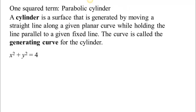One of the things that can occur is what we call a cylinder. When we say cylinder in this class, it might mean something a little different from what you're used to. A cylinder is a surface generated by moving a straight line along a given planar curve while holding the line parallel to a given fixed line. The curve is called the generating curve for the cylinder.